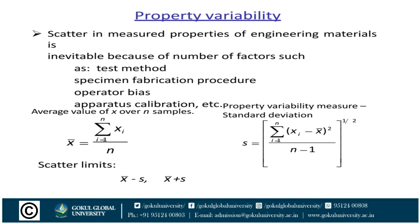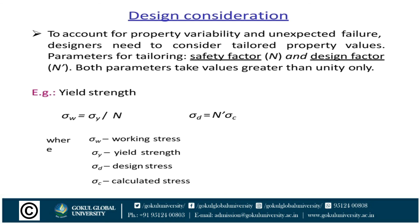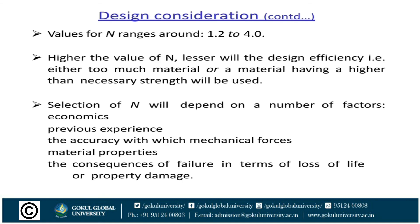Property variability: measured properties of engineering materials may vary because of a number of factors. The mean value is calculated as x-bar equals sigma(xi) divided by n, and s is the standard deviation. For design consideration, these properties account for variability and unexpected failure. Design needs to consider tolerance property values, safety factors, and design factors. So sigma_w equals sigma_y divided by N, and sigma_d equals N times sigma_c, where sigma_w is working stress, sigma_y is yield stress, sigma_d is design stress, and sigma_c is calculated stress. N ranges from 1.2 to 1.5.